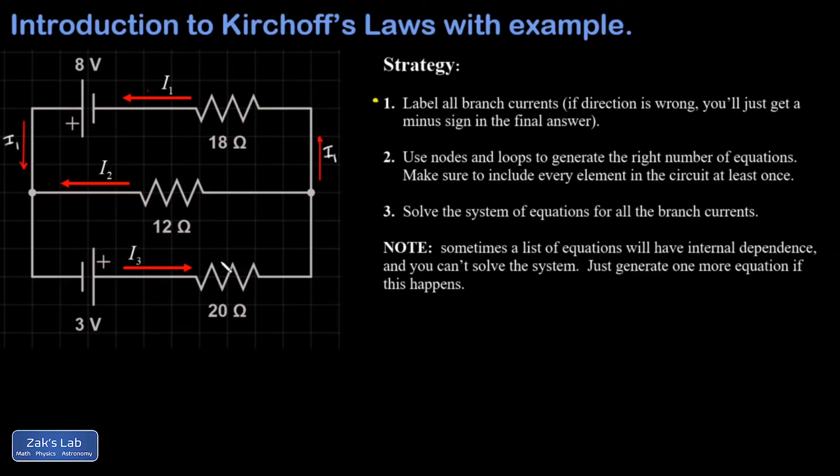and then in the middle branch, I have an I2. In the bottom branch, I have an I3. Note that you don't have to guess the correct direction of these currents before you actually do the calculations. If you get the direction wrong, it'll just come out with a minus sign out of the algebra, and that tells you the actual direction of the current is opposite to what you drew.